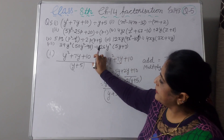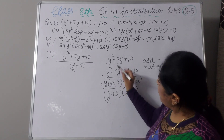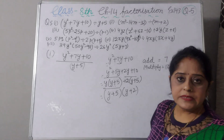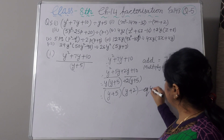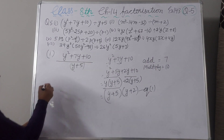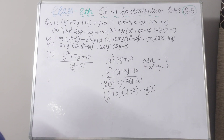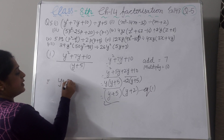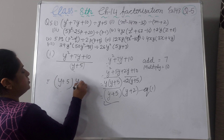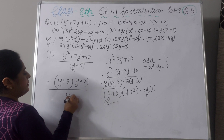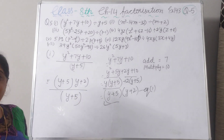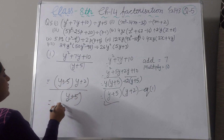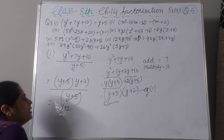You can solve this part separately. So y squared plus 7y plus 10 equals (y plus 5)(y plus 2). Now writing the full expression: (y plus 5)(y plus 2) divided by (y plus 5). Cancel y plus 5, and your answer will be y plus 2. Now, next sum.